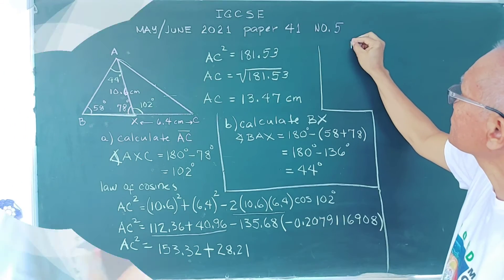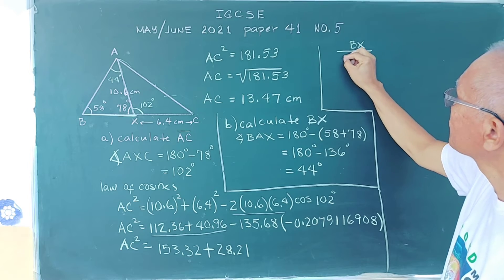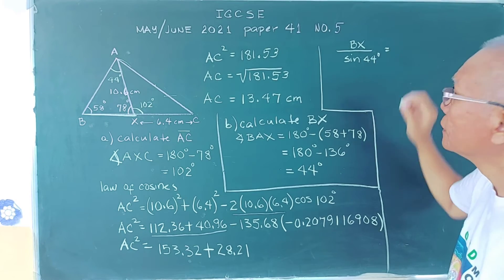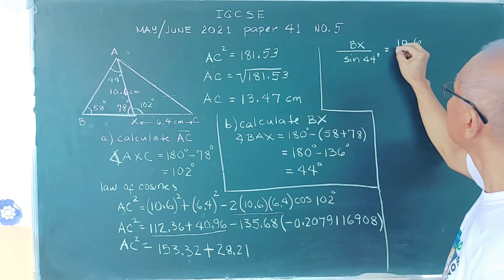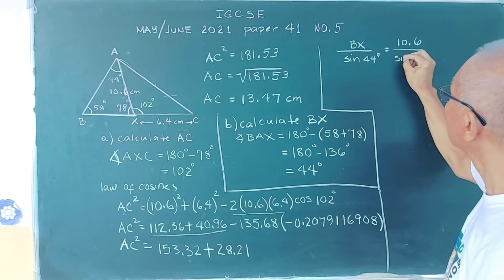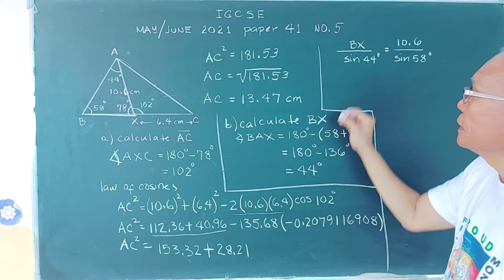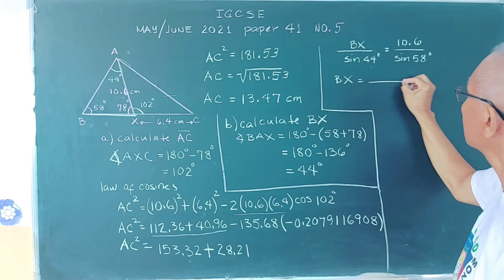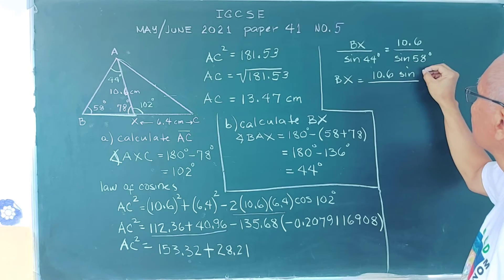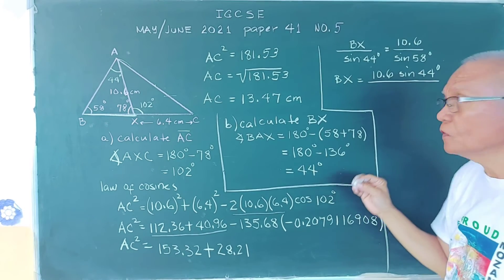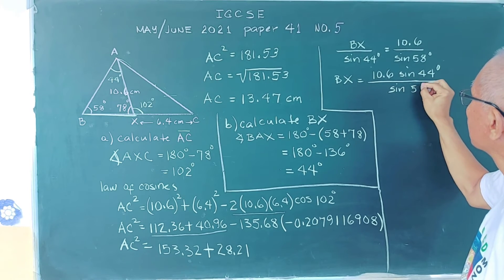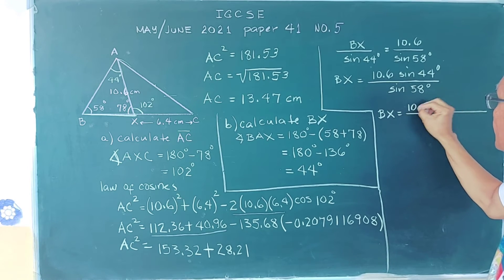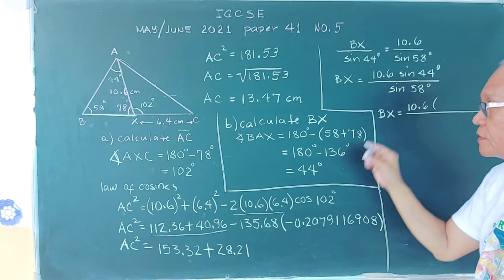Now we can use the law of sines. BX over sine of the angle opposite to BX, which is 44 degrees, equals the given side AX (10.6) over sine of the angle opposite to AX, which is 58 degrees. Cross-multiplying, BX equals 10.6 times sine 44 divided by sine 58.